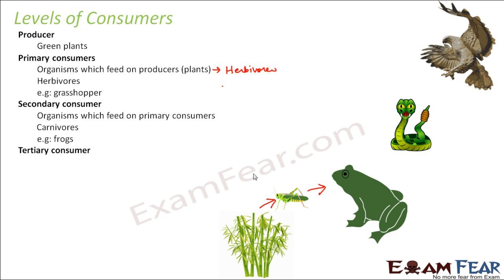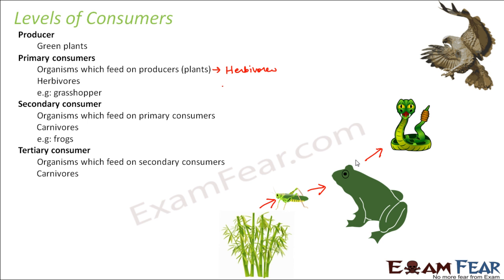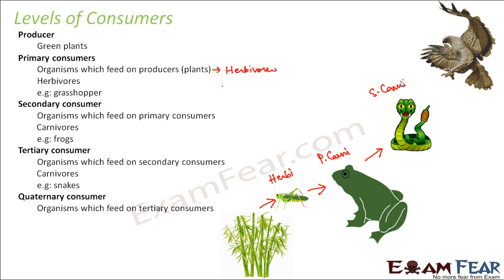This frog in turn is eaten up by the tertiary consumer, which is the snake. This consumer feeds on the secondary consumer and is also a carnivore, but it is a secondary carnivore. So basically: the grasshopper is a herbivore, the frog is a primary carnivore, and the snake is a secondary carnivore and a tertiary consumer.